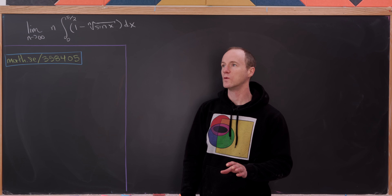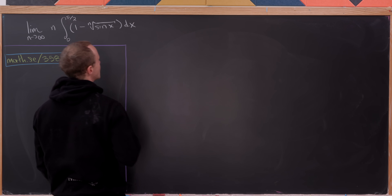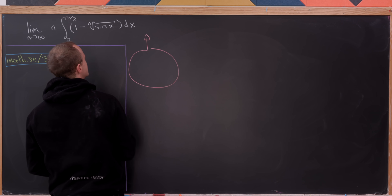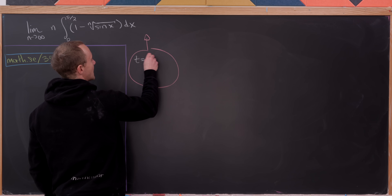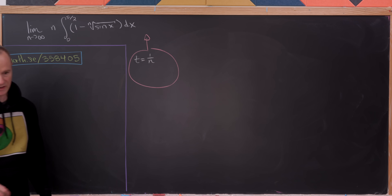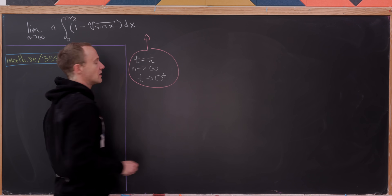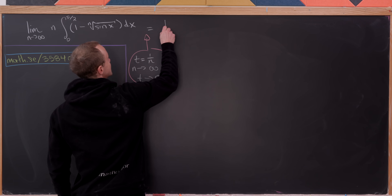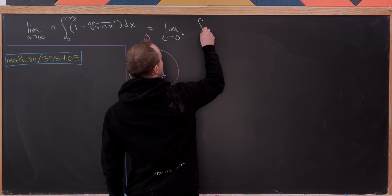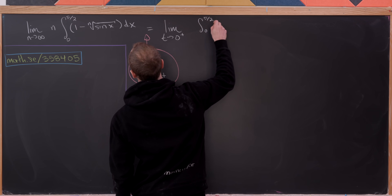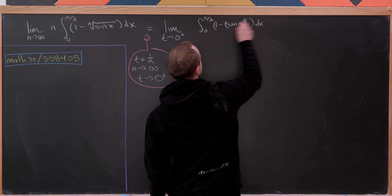I'm going to start off with a change of variables in the limit — a substitution. I'll take t equal to 1/n. As n approaches infinity, t will approach 0 from above. That turns this into a limit as t approaches 0 from above of the integral from 0 to π/2 of (1 minus sin(x)^t) dx, all over t.